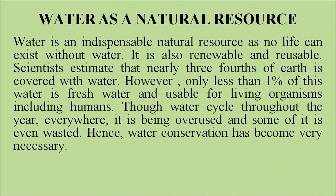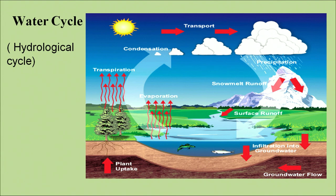Water is an indispensable natural resource. It is also a renewable and reusable resource. Scientists estimate that nearly three-fourths of the earth is covered with water. However, only one percent of this water is fresh and usable for living organisms including humans. Through the water cycle, throughout the year, it is being overused and some of it is even wasted. Hence, water conservation has become very necessary. This water cycle is depicted on your screen, and we will be talking about it in greater detail in the following slides.